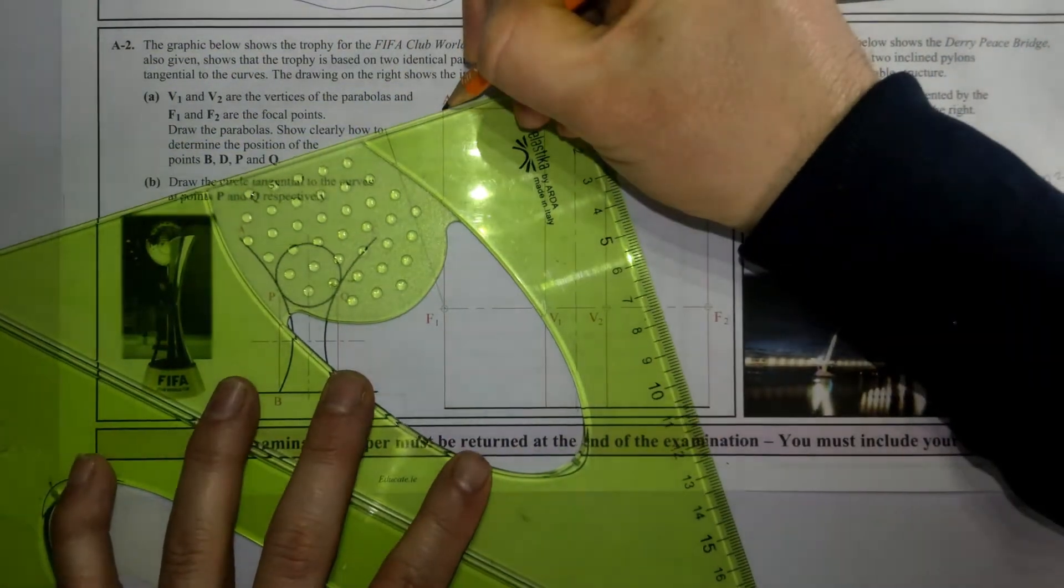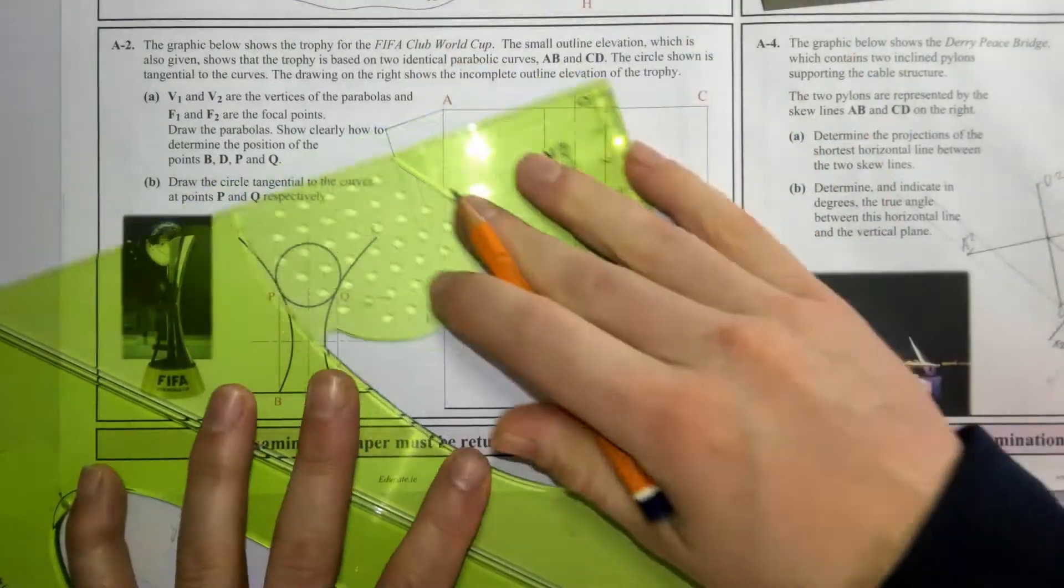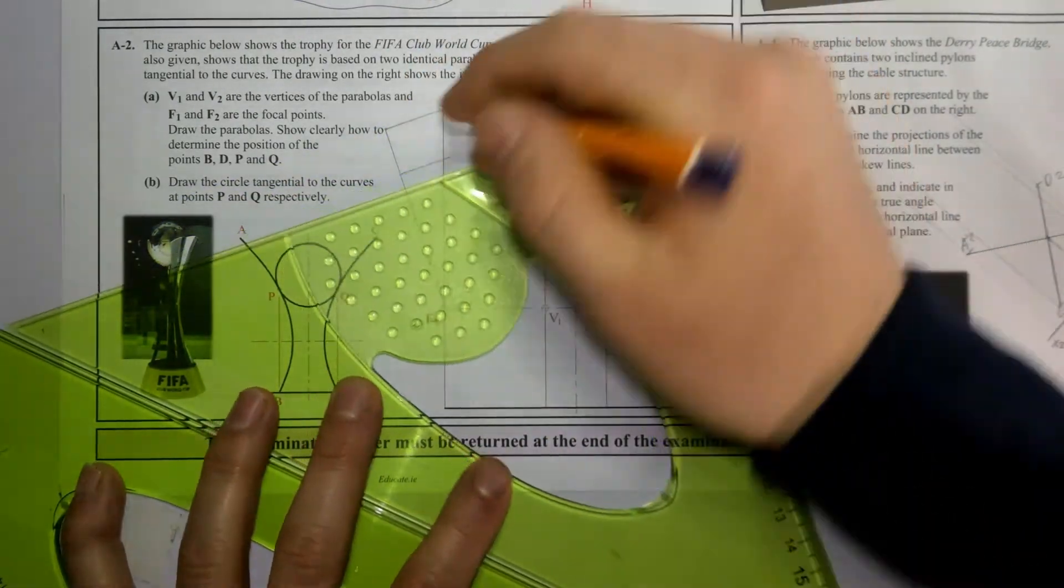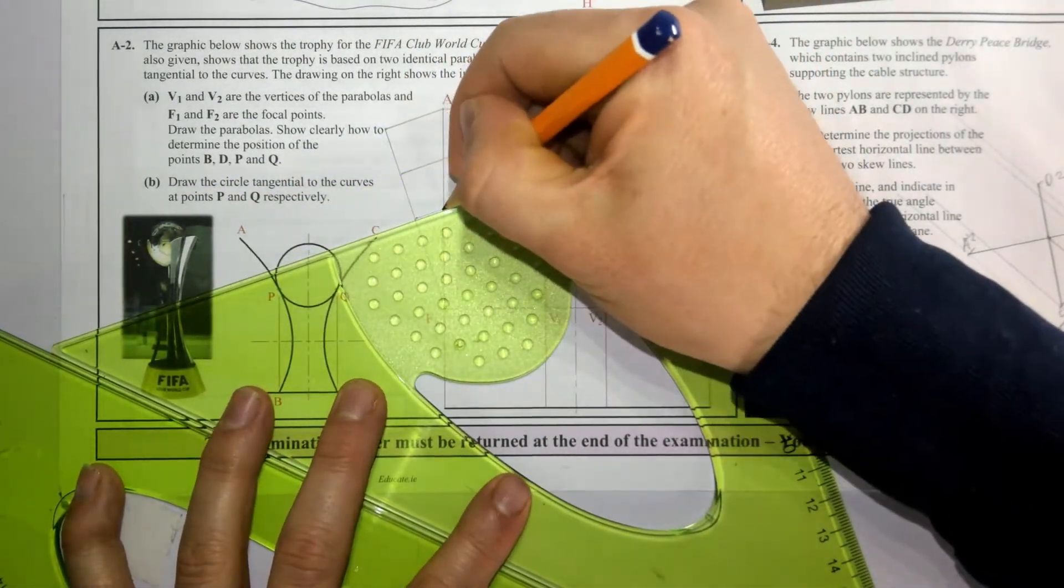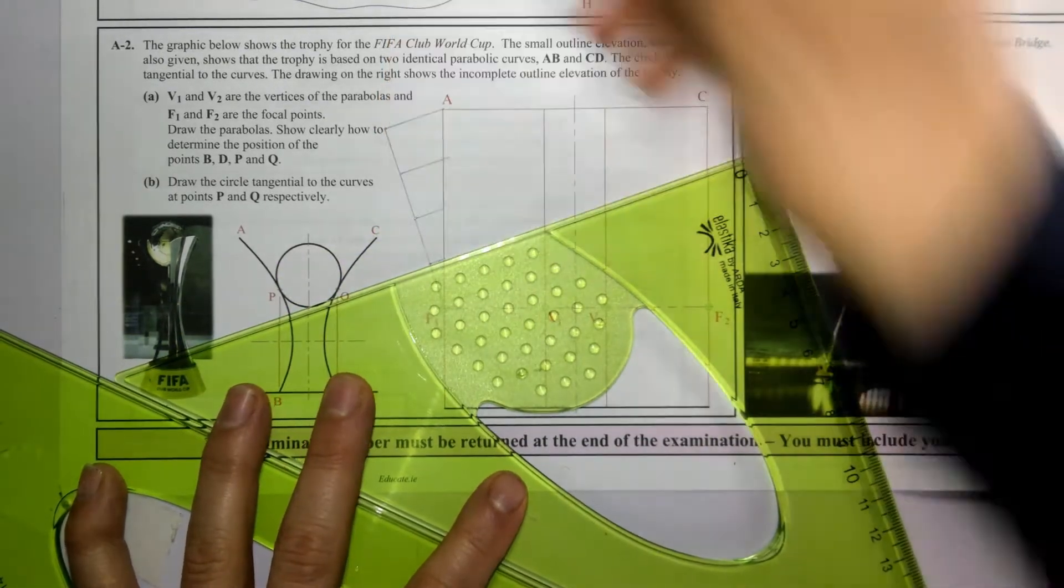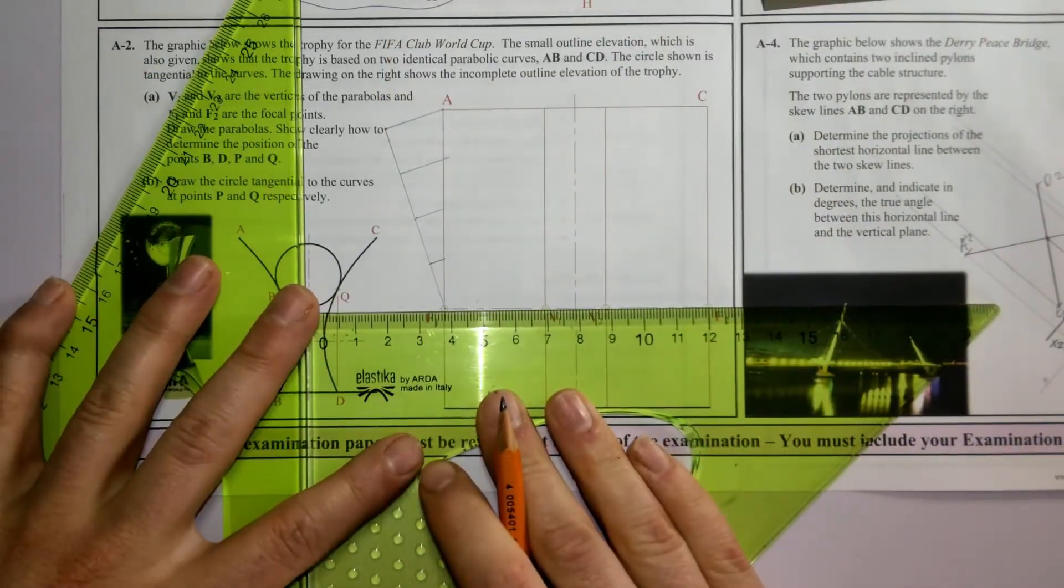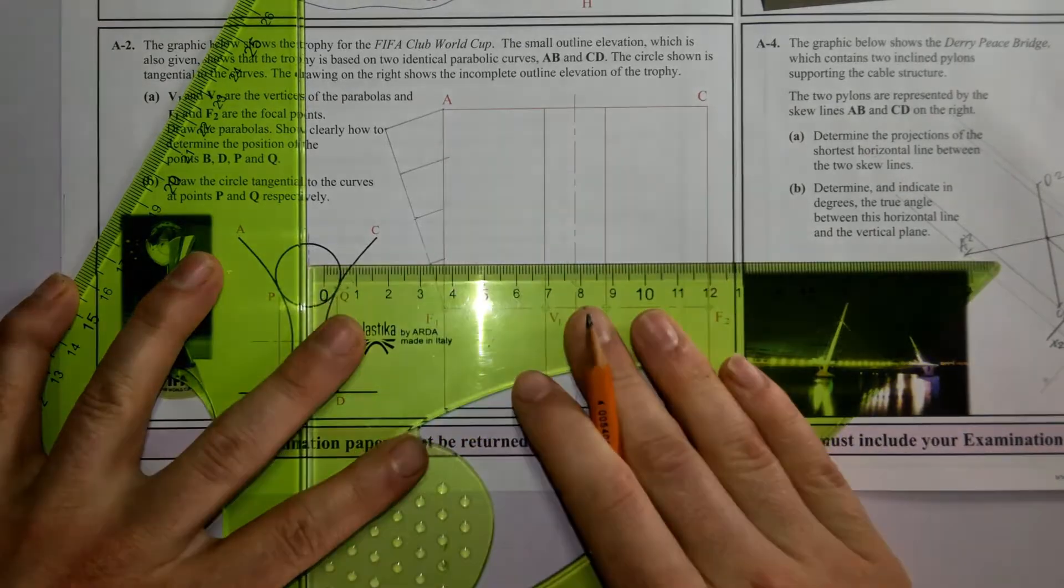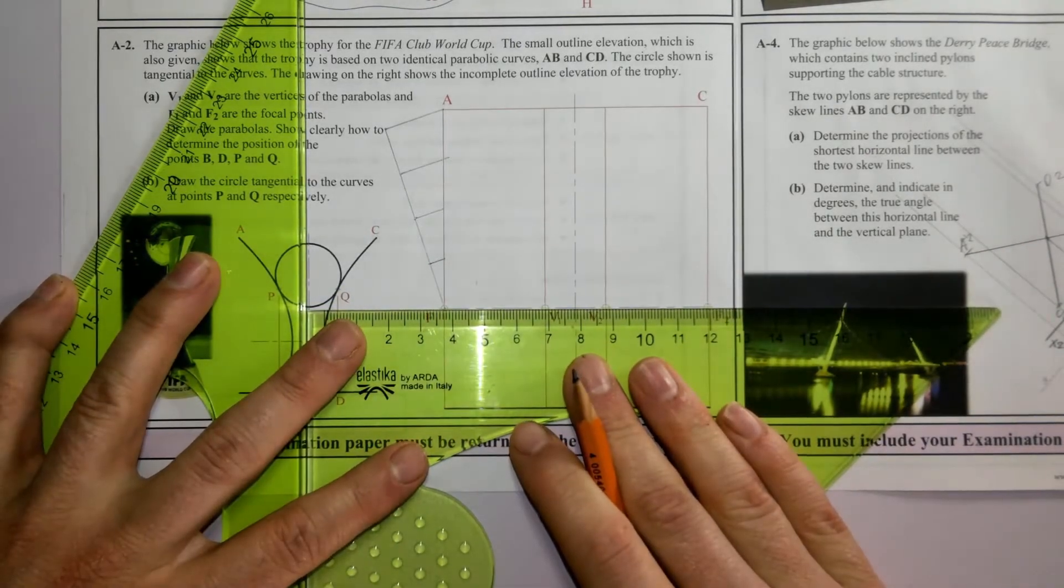Now I'm going to join the last point to A and draw subsequent lines parallel to that. Now from these points here on the division line, I'm going to draw them parallel to the axis.